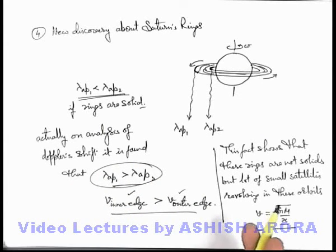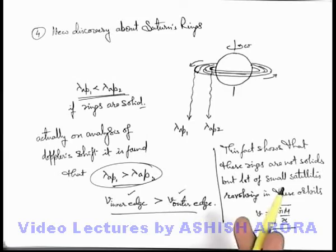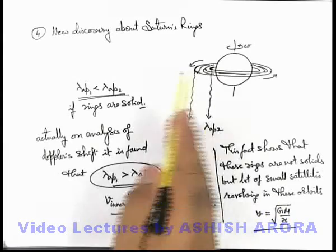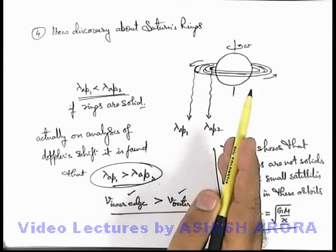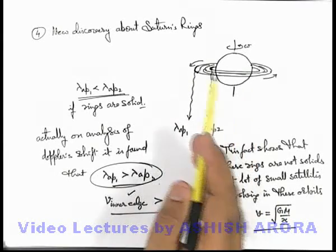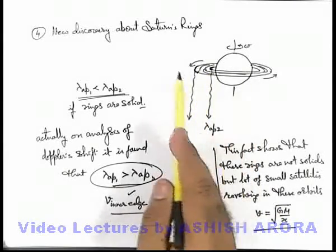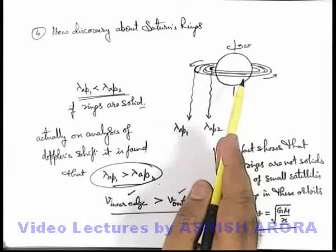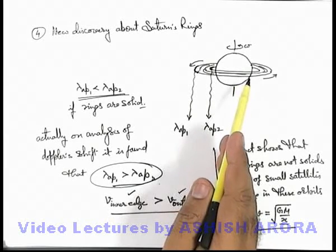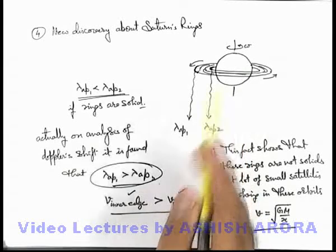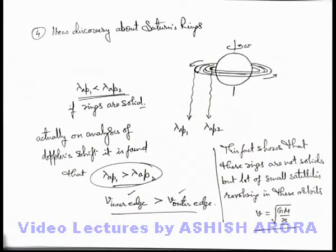So this was a valid proof which states that Saturn's rings are not solid — these are a lot of revolving small satellites in the surrounding orbits of the planet Saturn.